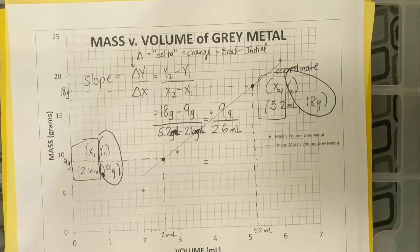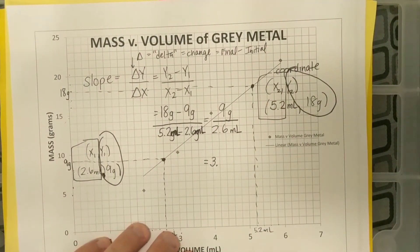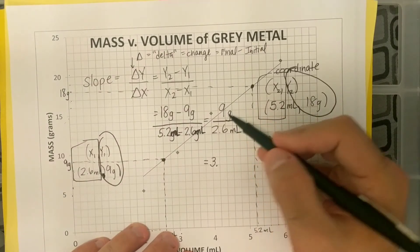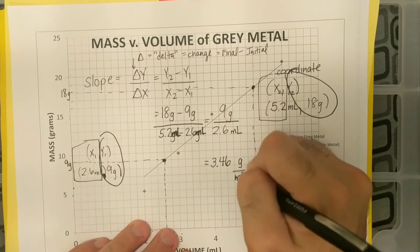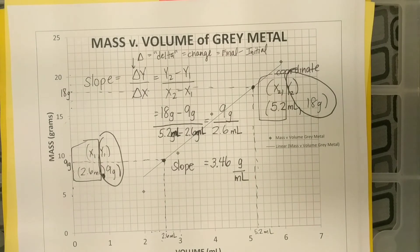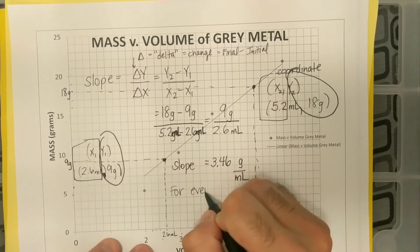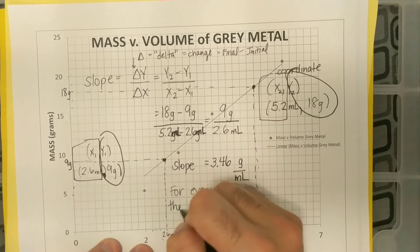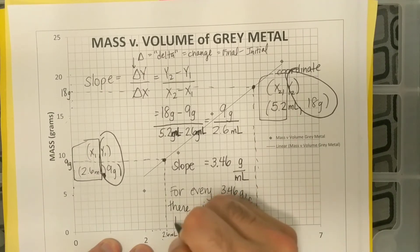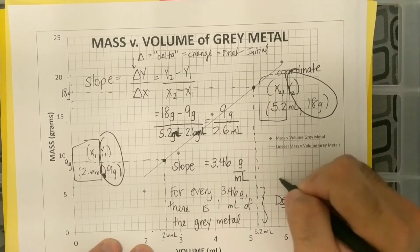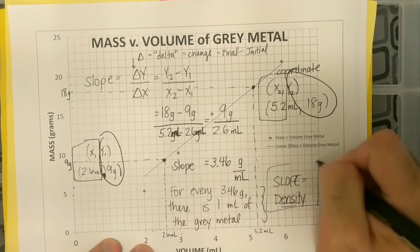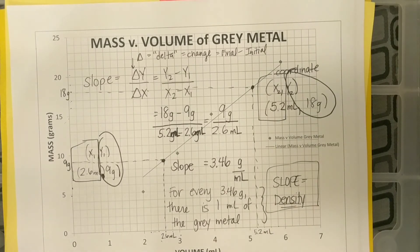If I solve for this, 9 divided by 2.6, I get 3 point, if I'm using the correct amount of significant figures, this one shows me one, but I probably rounded. I'm not going to do sig figs for this right now, but I'm just going to use as many sig figs as I want. 3.46 grams per milliliter is my slope. And do you remember what the slope equals for mass versus volume data? I'll give you a second to think about it. If the units are grams per milliliter, this is saying for every 3.46 grams, there is one milliliter of the gray metal. And we call this the density. So the slope equals the density.